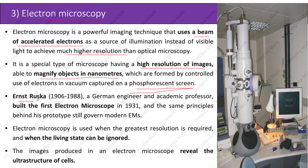Ernest Ruska, a German engineer and academic professor, built the first electron microscope in 1931, and the same principles behind his prototype still govern modern electron microscopes. Electron microscopy is used when the greatest resolution is required and when the living state can be ignored. The images produced in an electron microscope reveal the ultra-structures of cells.